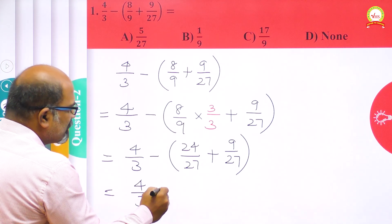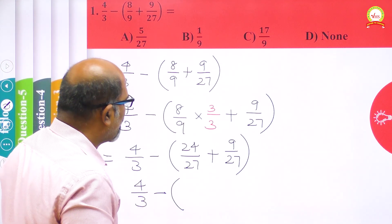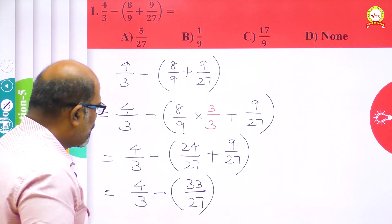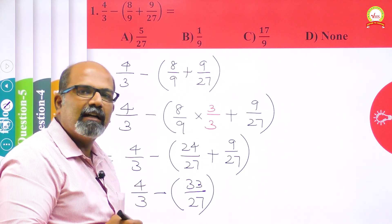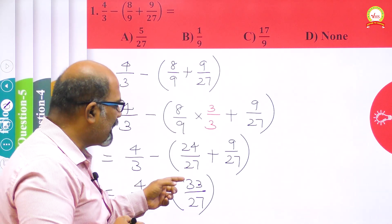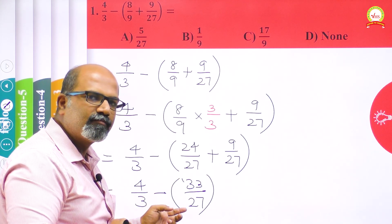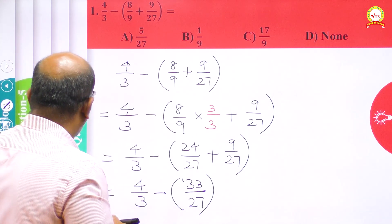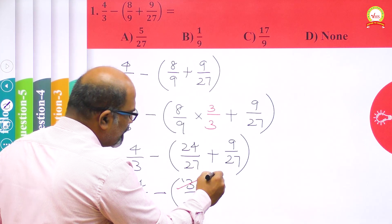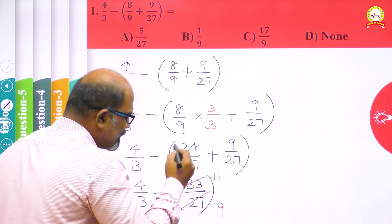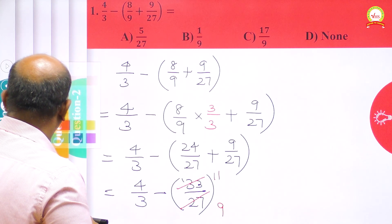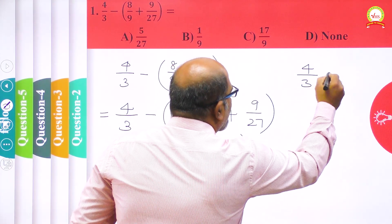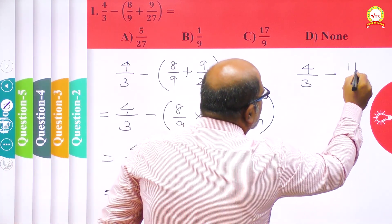So what we have in the next step: 4/3 minus (24 plus 9). We have to add 24 and 9, which gives 33. So we have 4/3 minus 33/27. This 33/27 can be simplified further because both the numerator and denominator have 3 as a common factor. So 11 threes are 33 and 9 threes are 27, leaving us with 4/3 minus 11/9.